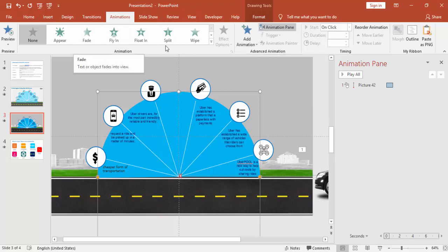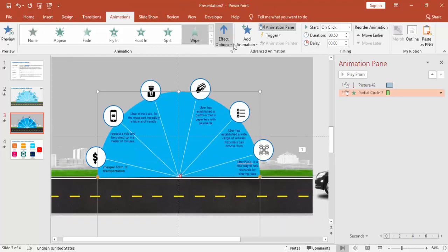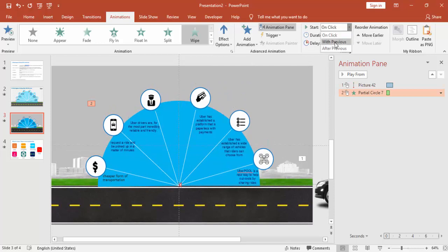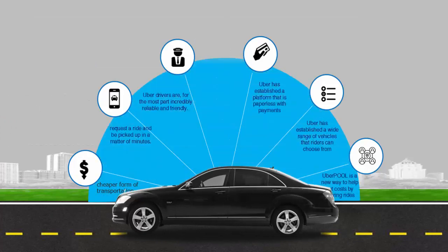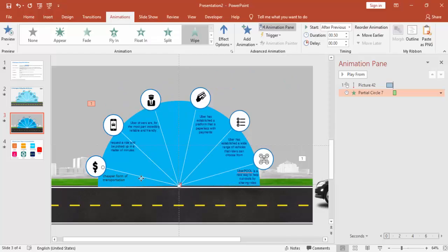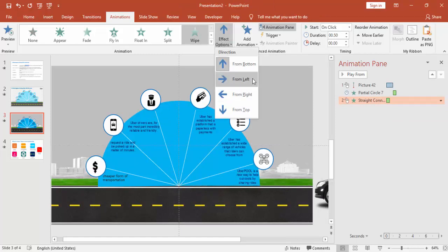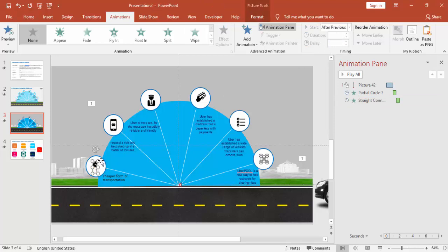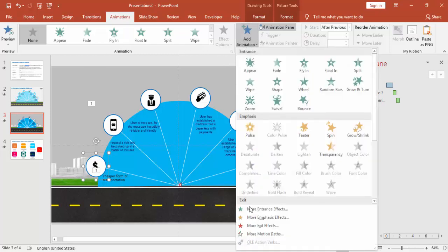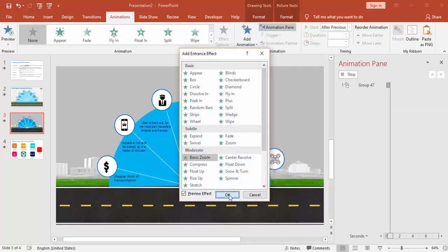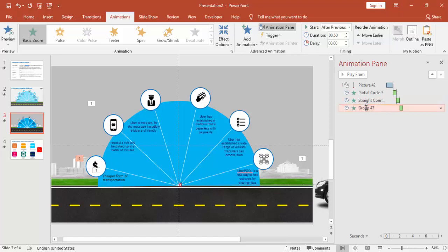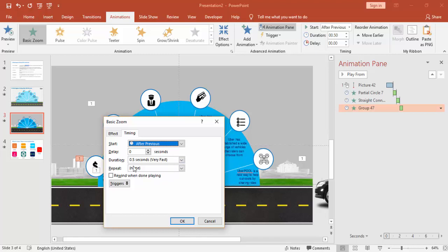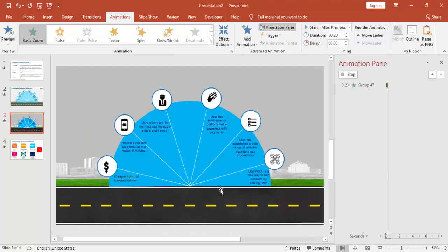For the semicircle I'm going to use a Wipe effect from the bottom. This should happen after the car comes in. Then I'm going to give animation to each line — using Wipe again, from the right, set to After Previous. I'll group two objects together and give them animation using More Entrance Effects > Basic Zoom. Set to After Previous, at maybe 0.2 seconds speed.